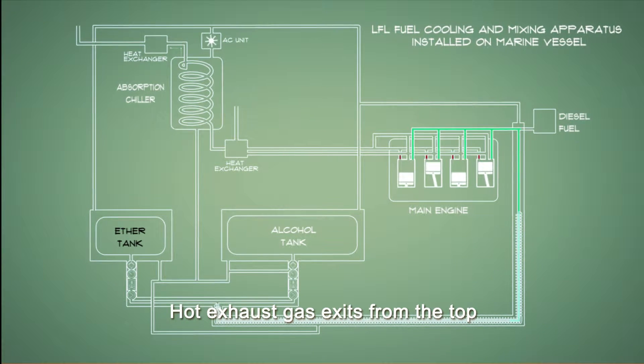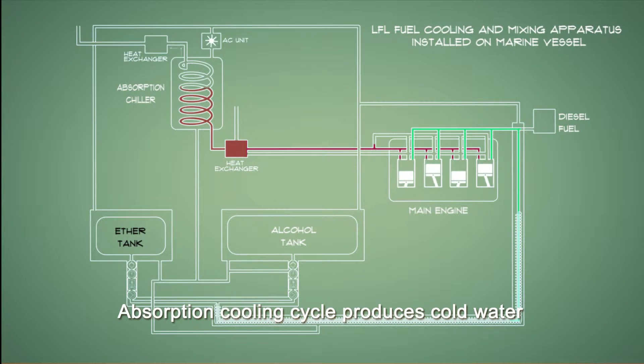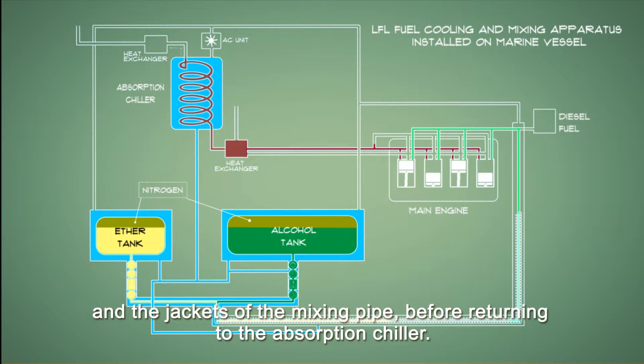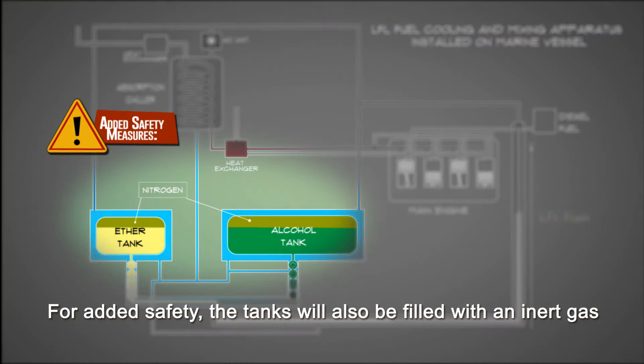Hot exhaust gas exits from the top and flows towards the absorption chiller. Absorption cooling cycle produces cold water, which flows around the jackets of the ether and alcohol fuel tanks and the jackets of the mixing pipe, before returning to the absorption chiller. For added safety,